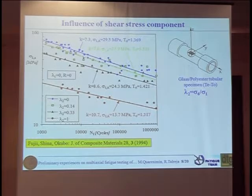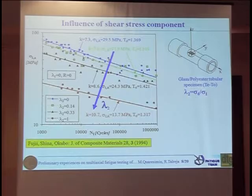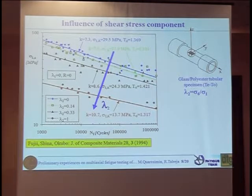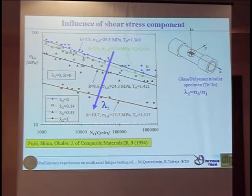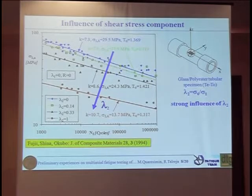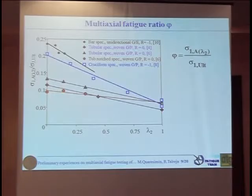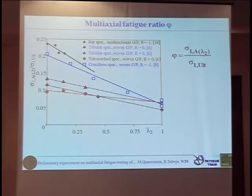The main conclusion from the previous work with Luca and Mr. Tareggia is that the main important parameter from our results is lambda 2, which is the influence of the shear stress component on the normal stress. For the different series — these are composite tubes under tension-torsion loading — you can see that increasing lambda 2, which means increasing the torsional component of the load, you have an increase of the fatigue strength. We summarized this behavior using what we call the multi-axial fatigue ratio diagram, and if you plot this ratio against the lambda 2 parameter, you have a more or less linear decrease of the normalized fatigue strength.